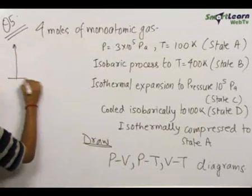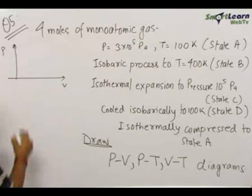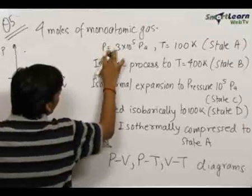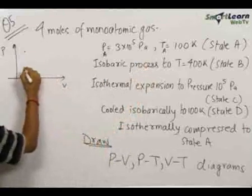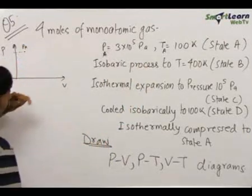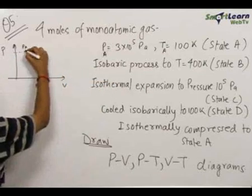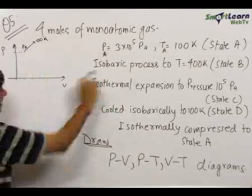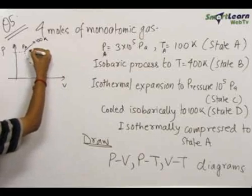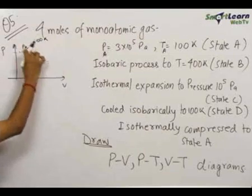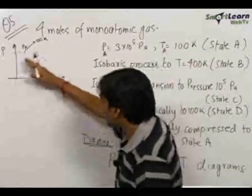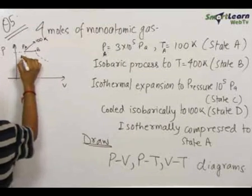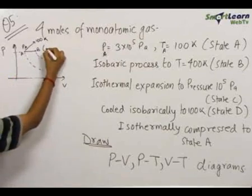Let us first draw the PV diagram. The initial state is state A at pressure P_A and volume V_A. It undergoes an isobaric process, so it moves along a constant pressure line. Since temperature is increasing, we know that isotherms on a PV curve increase going upward, so we move to a higher isotherm. This gives us state B, with the process going from A to B isobarically at temperature 400 Kelvin.